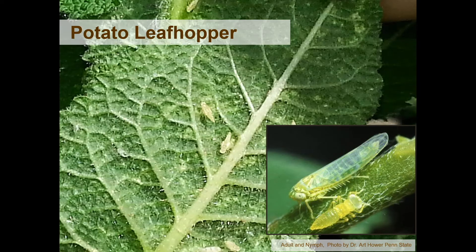The potato leafhopper is the most common species of leafhopper on chrysanthemums. Down in the bottom corner we see an adult and a nymph together. When you cast a shadow or ruffle a leaf, those nymphs may be on the top but they'll pretty quickly scurry to the bottom of the leaf away from you, and the adults will fly-hop — really weak flyers, that's why they're called hoppers — to the next plant or so.